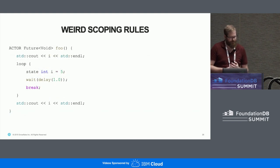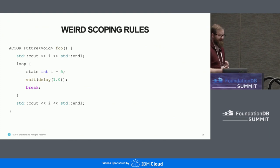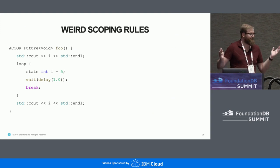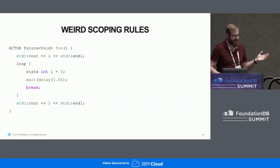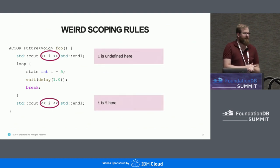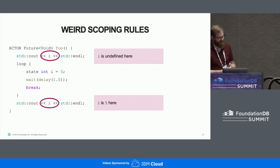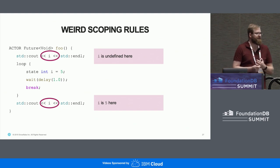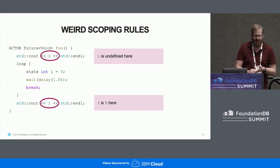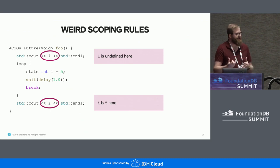There are also some weird scoping rules. This actor will actually compile even though it shouldn't. What's the result? It's not clear what it should do. If you run it, the first line is undefined behavior — it might give you whatever. The second print will give you five. The reason, if you understand how state variables work, is simple: the state variable is just part of the actor state, available throughout the whole time the actor is running, and the compiler doesn't actually prevent you from writing code like that. So be careful.